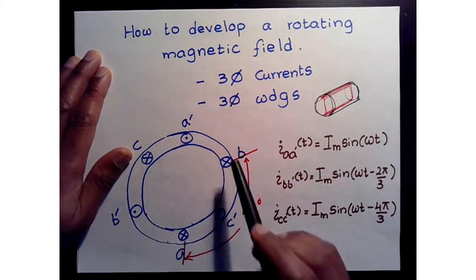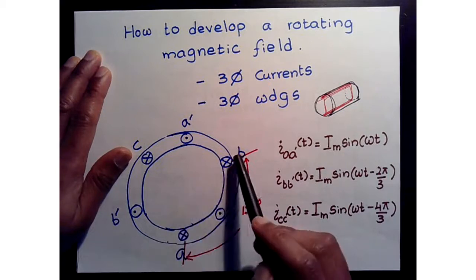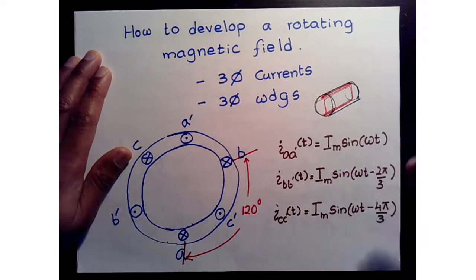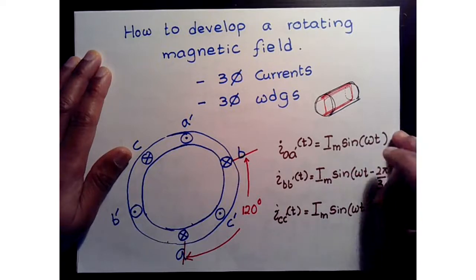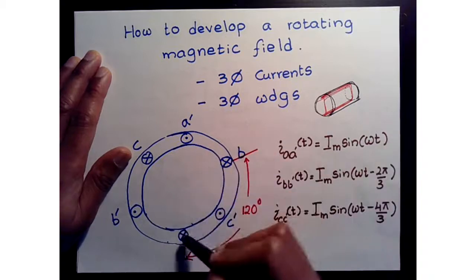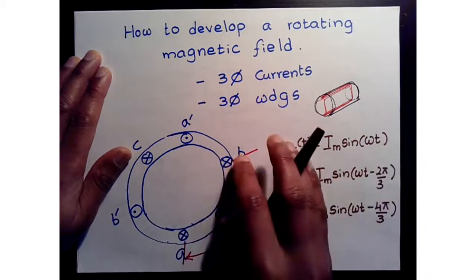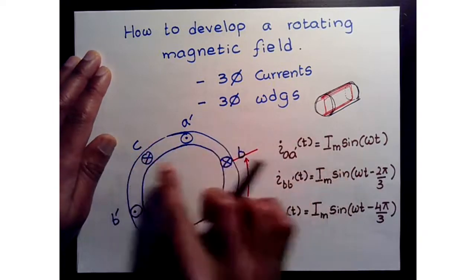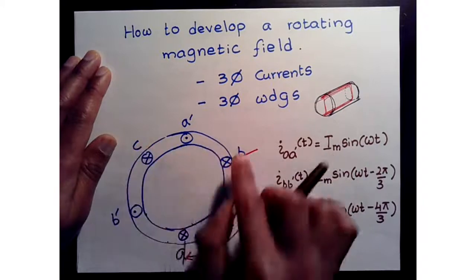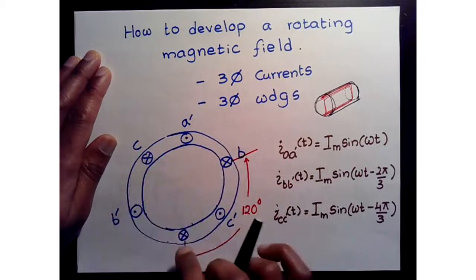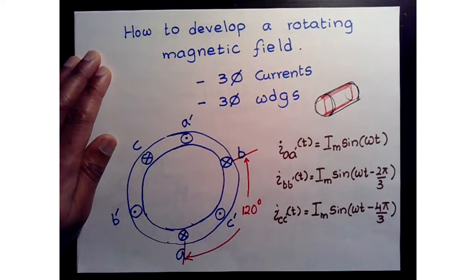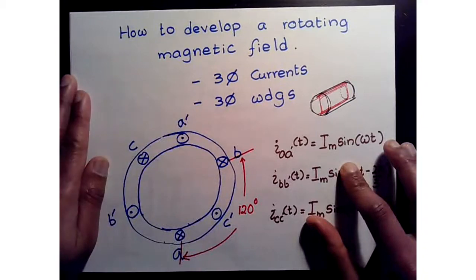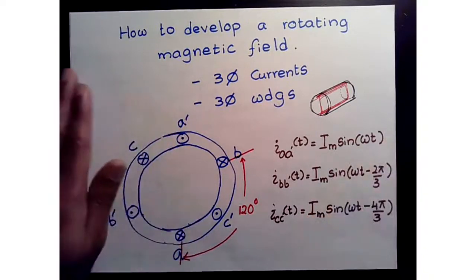Having these three-phase windings, we can represent them such that they are spatially at a certain angular offset. We can say the A winding is at 0 degrees, the B winding is 120 degrees out of phase, and the C winding is another 120 degrees out of phase from B — or 240 degrees out of phase from A. Let's set that aside for a moment and look at our currents.